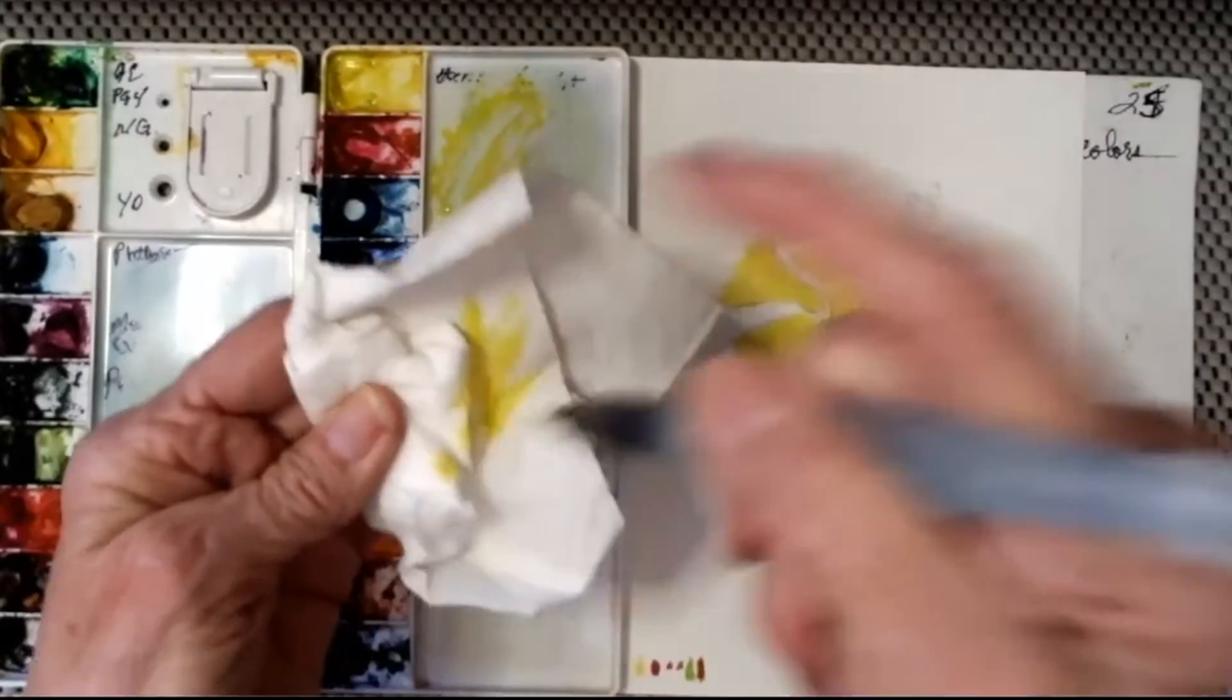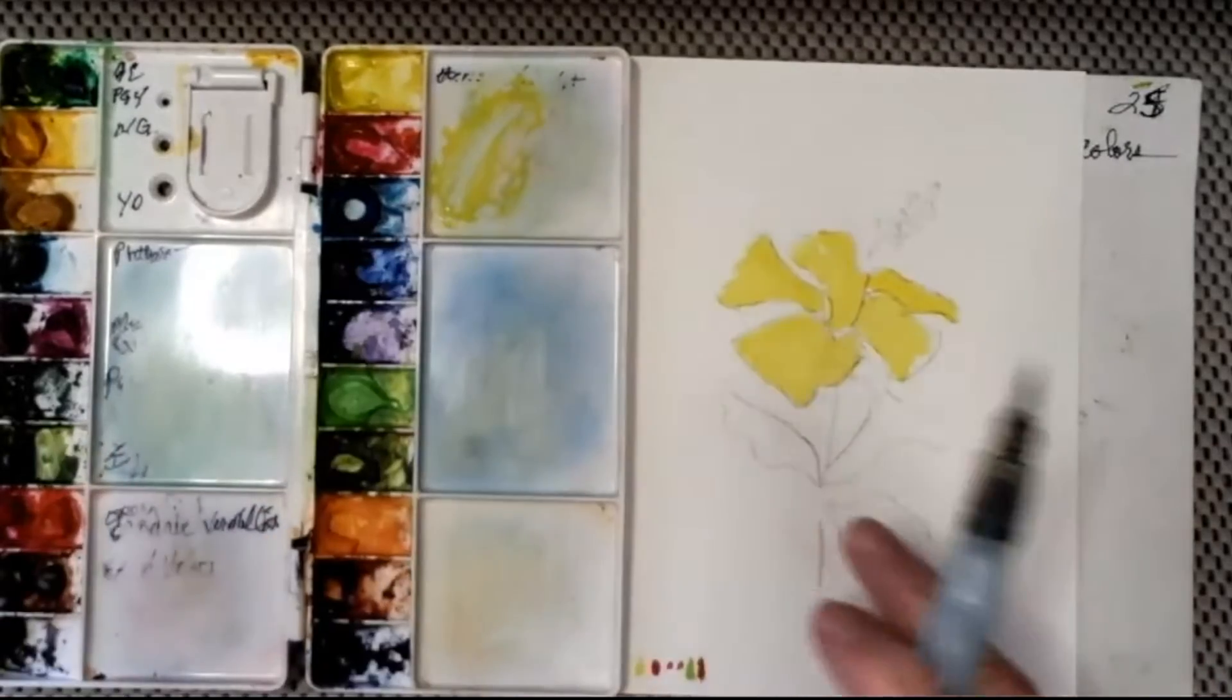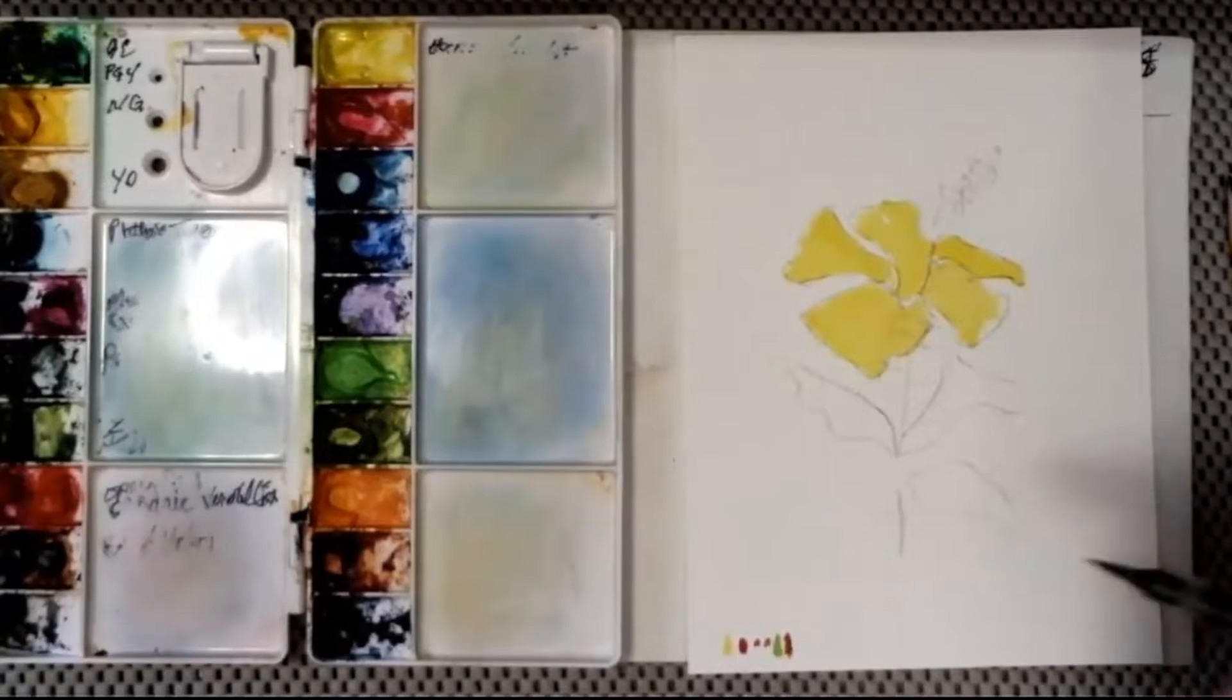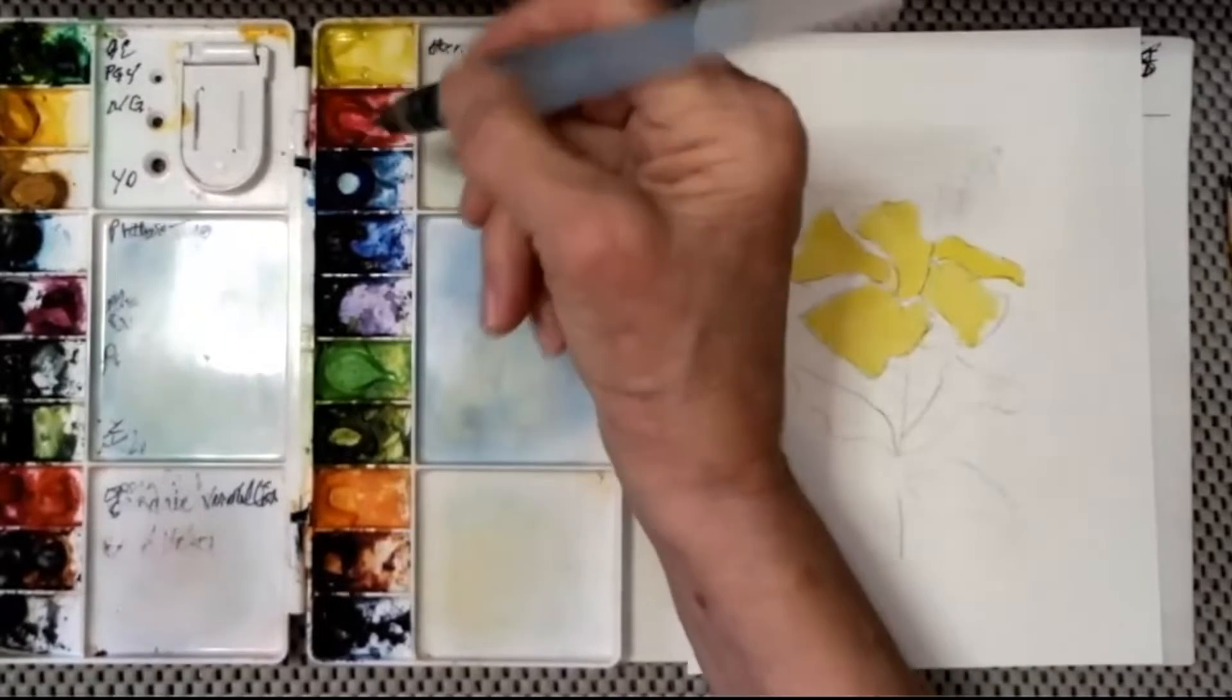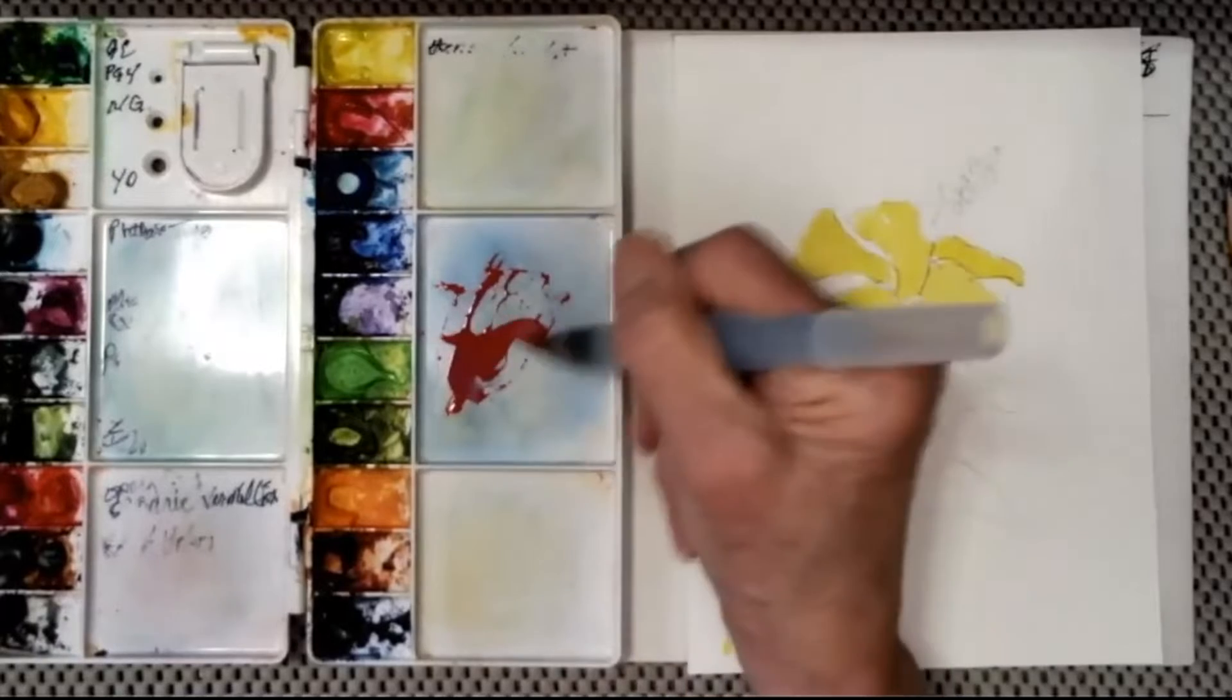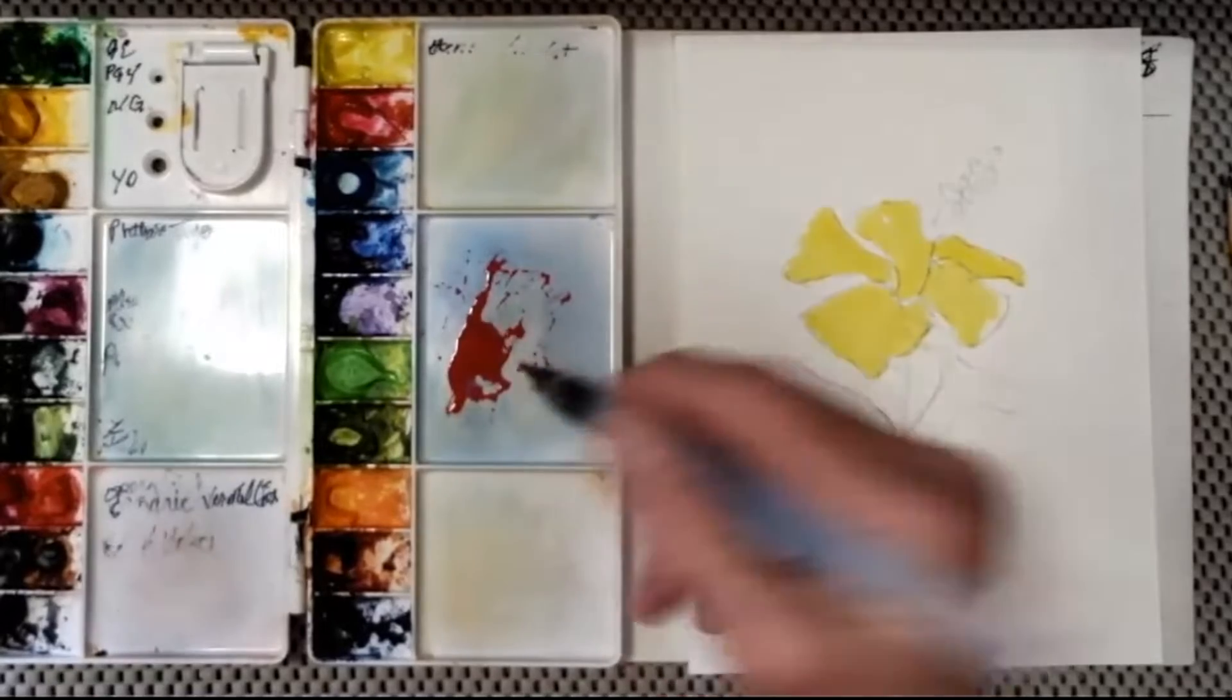Now I'm going to clean my brush by wiping the brush on the paper towel and then squeezing, and the brush is all clean. And that's the only time I squeeze my brush is when I'm cleaning it. Now I'm going to load my brush with the red. And the hibiscus, the yellow part of the hibiscus is dry. And now I'm going to use red and create the center of my hibiscus.